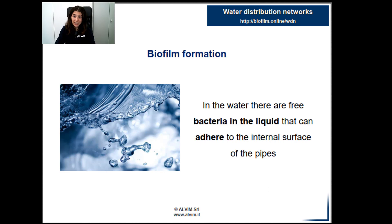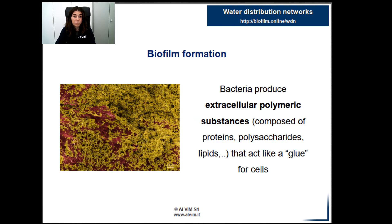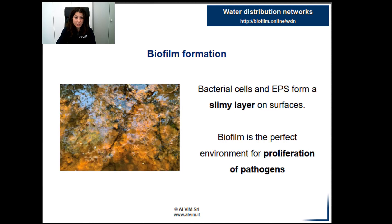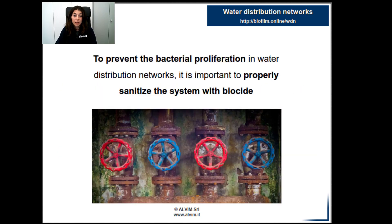In water, free-floating bacteria live and can settle at the internal surface of the pipes. Here, bacteria adhere and produce extracellular substances such as proteins, lipids, or polysaccharides. These substances, called EPS, form a reticulated network that holds cells tightly together. Indeed, biofilm is a sticky and slimy material composed of bacterial cells and EPS, in which pathogens can grow and survive very well because of the favorable environment. In water distribution networks, biofilm growth is very dangerous for human health because bacteria and pathogens can rapidly proliferate and propagate. That's why it's fundamental to properly sanitize the whole system.